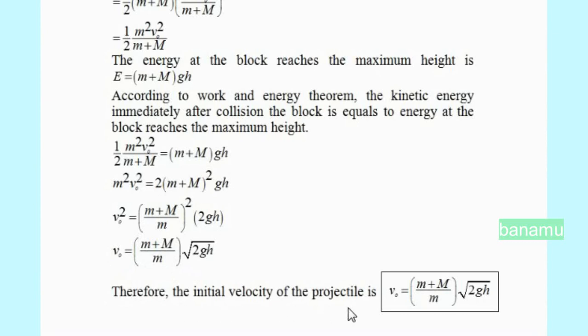Therefore, the initial velocity of the projectile is V0 equals m plus M by m into root over 2gh.